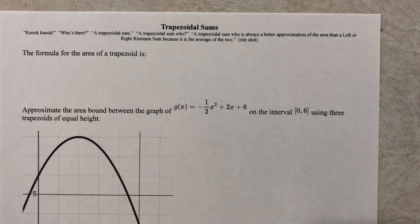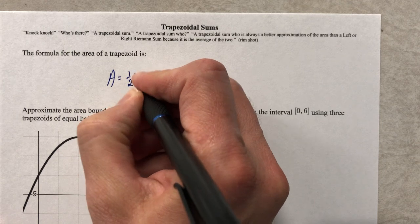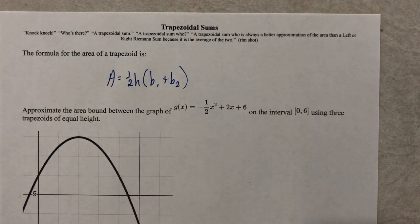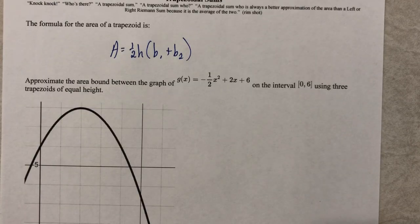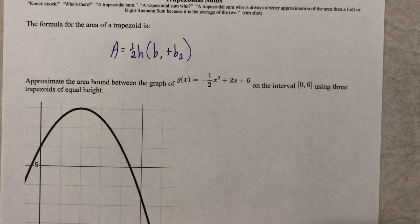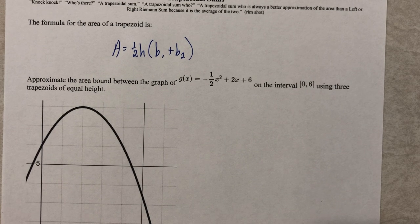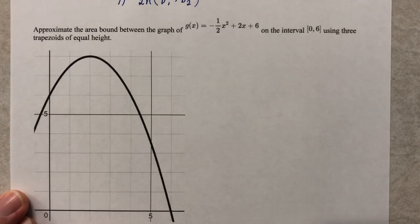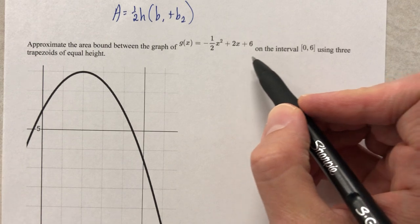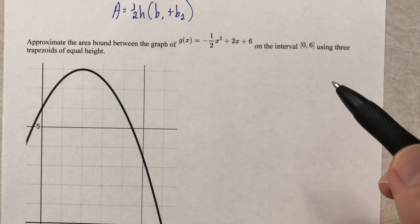So formula for the area of a trapezoid. You have seen this in a previous lesson, but I'm gonna write it anyway. There we go. And let's move to the next problem. Approximate the area bound between this graph and the graph of that on the interval. Oh, between that and the x-axis, I should say. The x-axis. It's implied.